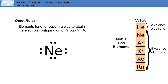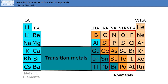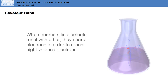Atoms reach eight electrons by sharing electrons through covalent bonds. Metallic elements at the left side of the periodic table tend to lose one or more electrons and form positive ions, such as sodium and magnesium. Each of these has the same electron configuration as the noble gas that precedes it. Nonmetals at the right side of the periodic table tend to either gain electrons to form negative ions, such as fluorine, oxygen, and nitrogen, or to share electrons in covalent bonds. When nonmetallic elements react with each other, they share electrons in order to reach eight valence electrons.